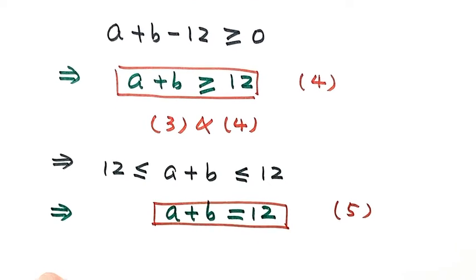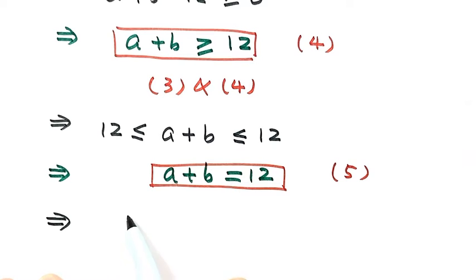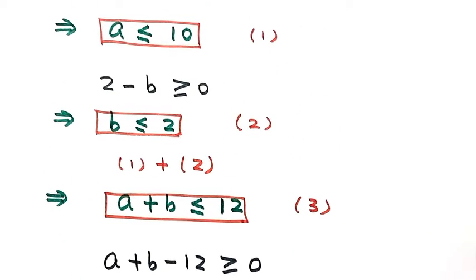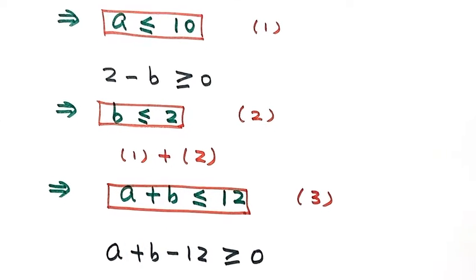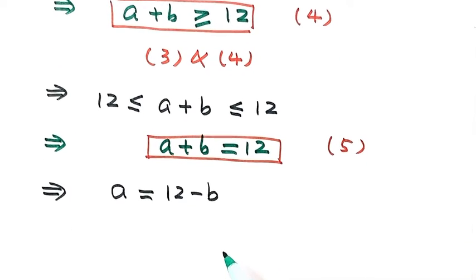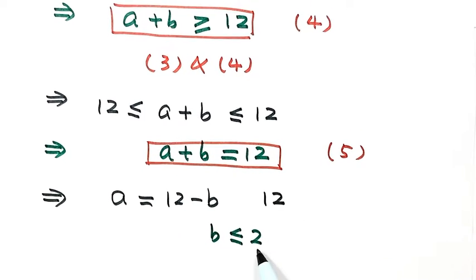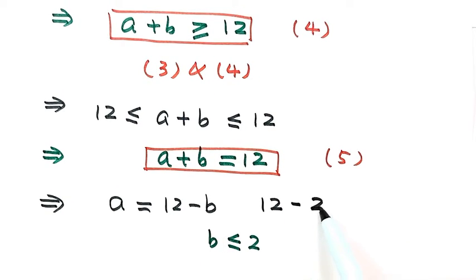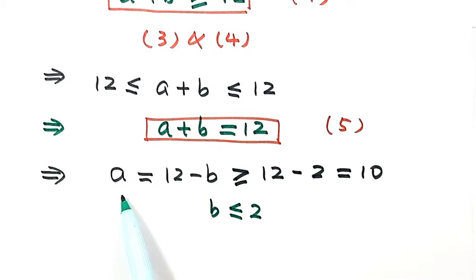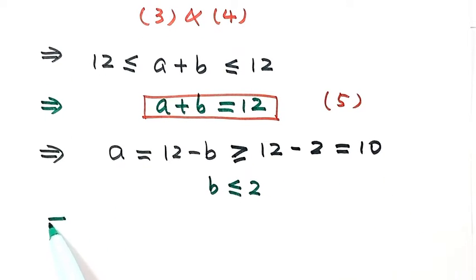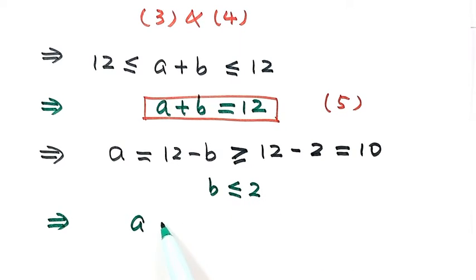Now let's solve for a. From result 5, a equals 12 minus b. Looking at result 2, b is less than or equal to 2. Substituting b with 2: since subtracting a larger number gives a smaller result, a is bigger than or equal to 12 minus 2, which equals 10. So a is bigger than or equal to 10. We mark this as result 6.